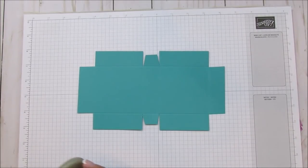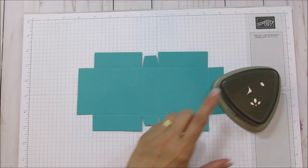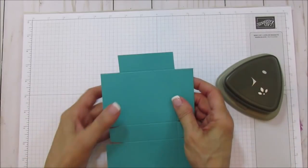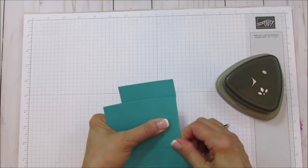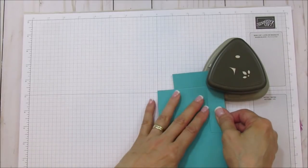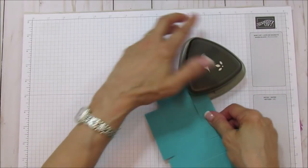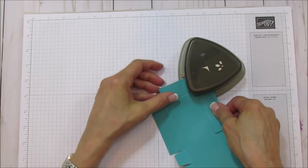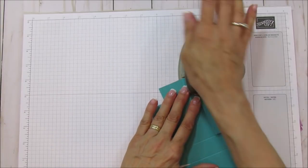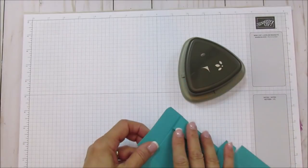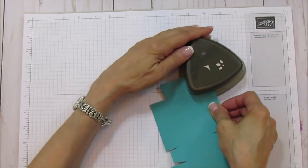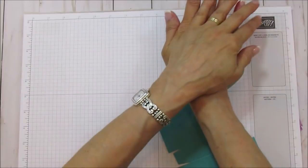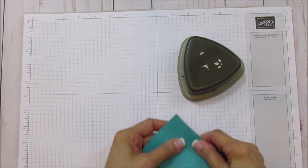I'm going to bring my Detailed Trio Punch up here. We're going to round the corners on this. You do have to fold these in when you're doing your corners. Line that up.